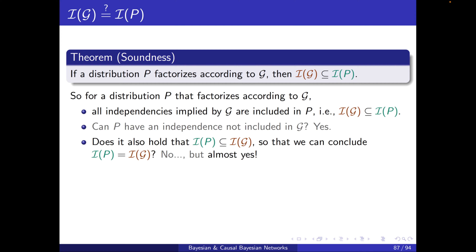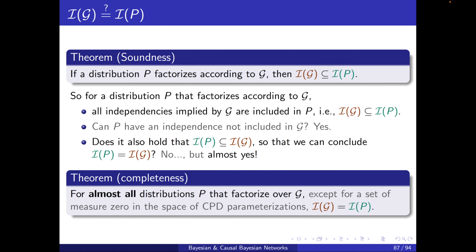In math, we can have "almost yes." Here is the completeness theorem: for almost all distributions P that factorize over G, IG will be equal to IP, except for a set of measure zero in the space of CPD parameterizations.